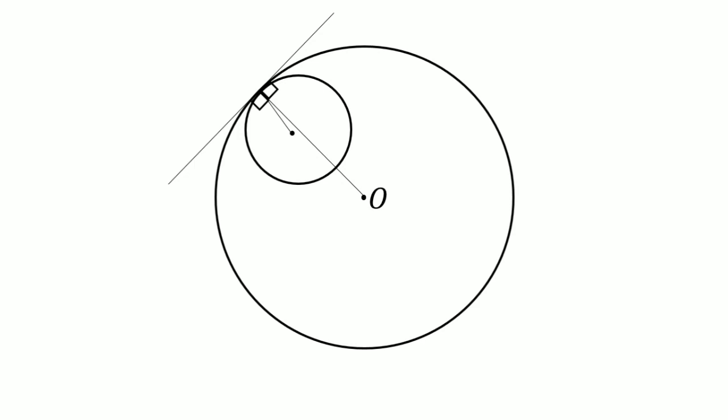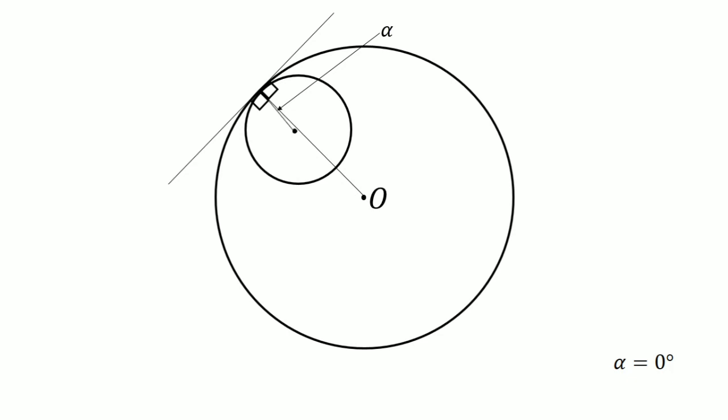Now the angle between the smaller and bigger radius, let this be alpha. Writing the equation of our complete line: 180 degrees equals 90 degrees plus 90 degrees plus alpha. So what we have is alpha equals zero. This means the tangential line from the center of the bigger circle is passing through the center of the smaller circle, as shown in the figure.